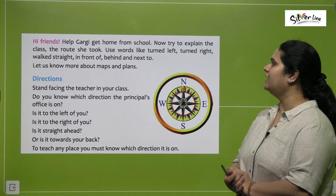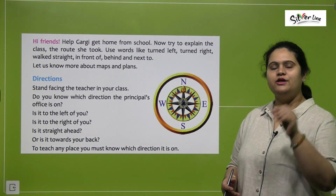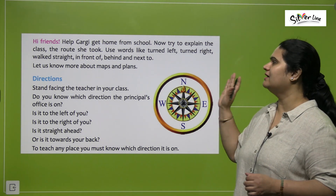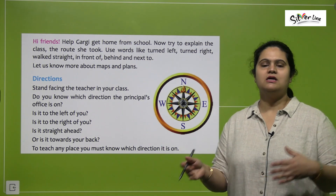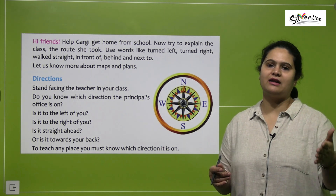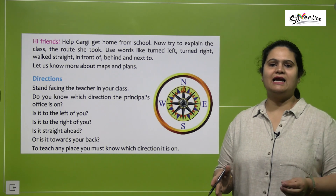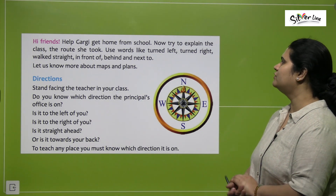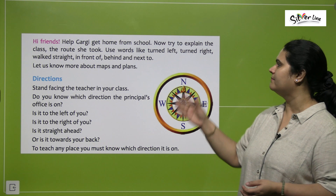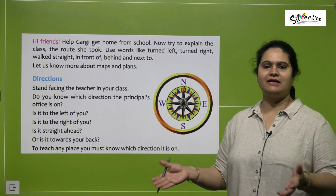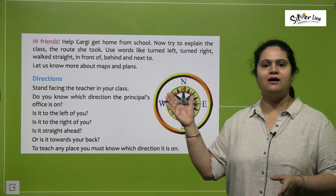So friends, help Gargi get home from school. Gargi ek bachi hai, usse apne ghar school se jana hai. You have to help her out. Try to explain to the class the route she took — she went straight, then she took a left, then she took a right, then she went up till the road went straight. You have to use words like turned left, turned right, walk straight, and landmarks like in front of that building or next to this place. This way you can explain the directions to a person when he or she is trying to get to a particular place.